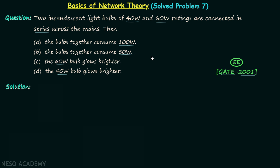After looking at the four options, it is clear that we are required to find two things: the total power consumption of the two bulbs connected in series, and which bulb is glowing brighter — the 40 watt bulb or the 60 watt bulb.